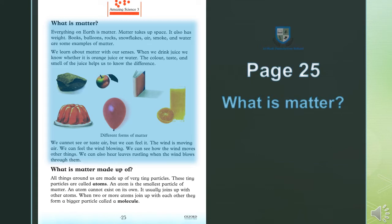Books, kitaabin, balloons, gubara, rocks, chitanek, snowflakes, burraf ki tukde, air, hawa, smoke, dhuwaan and water or paani are some examples of matter. Maada ki kuch misal hain.